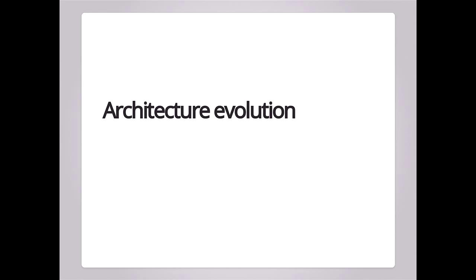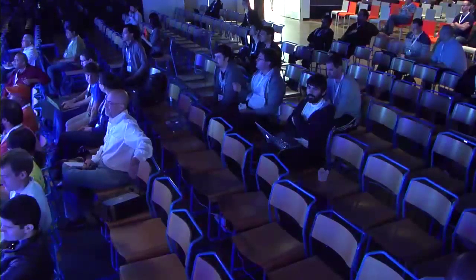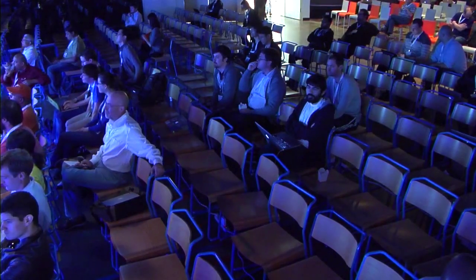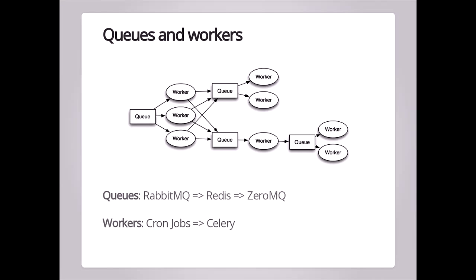So how did the architecture of Parsley evolve over time? We started, like almost every distributed system engineering team, with a basic queues and workers architecture. Like most people, we started with tools that are well-worn and understood, like RabbitMQ. When we hit scaling issues with those, we moved to more lightweight queuing mechanisms like Redis and ZeroMQ. With workers, we started with the simplest possible — cron jobs doing certain things in Python — and then went up to something like Celery, which is a pretty nice worker system in Python's community.